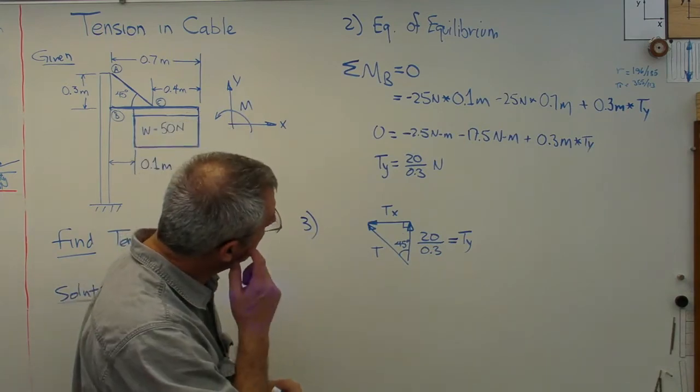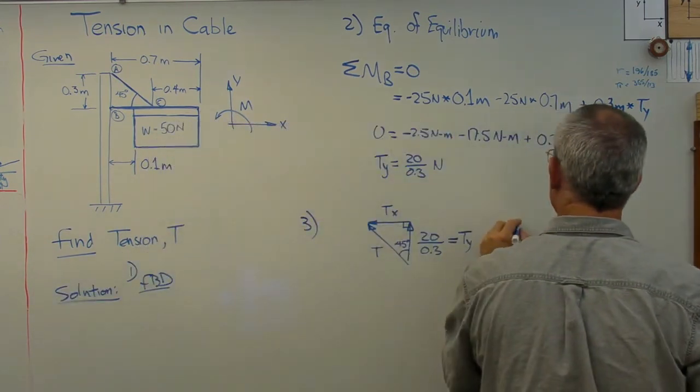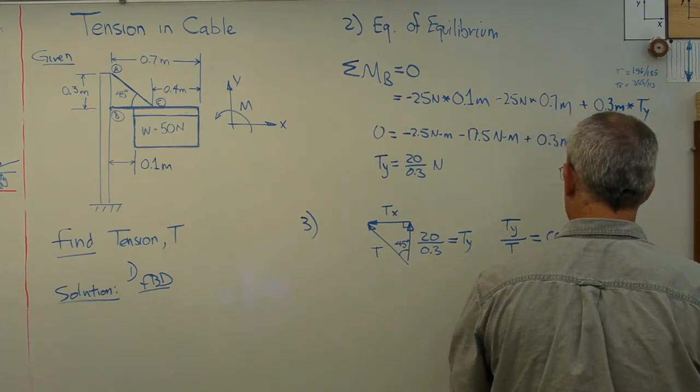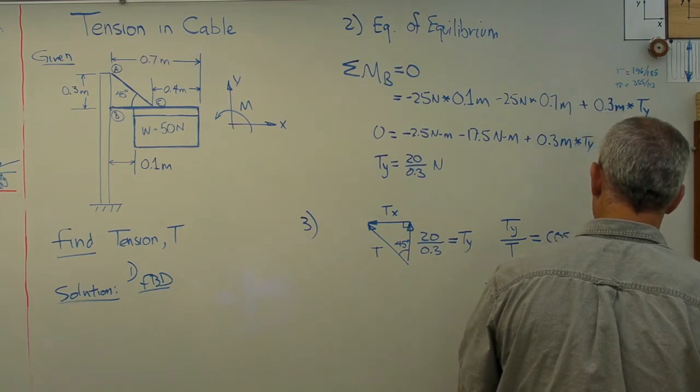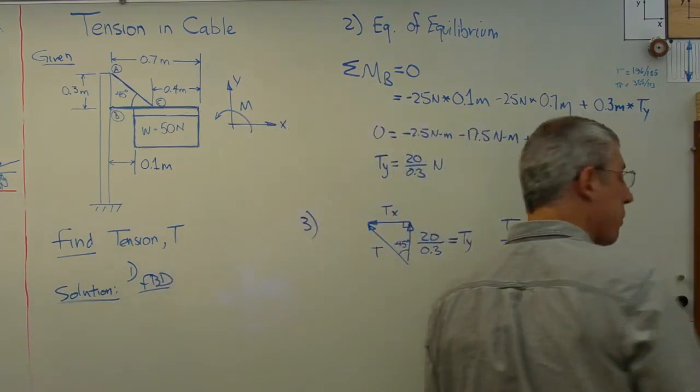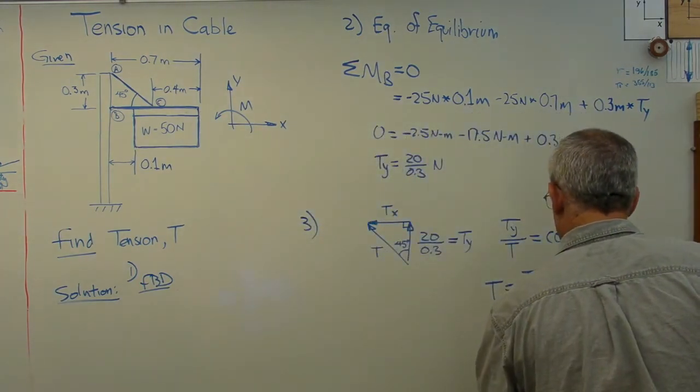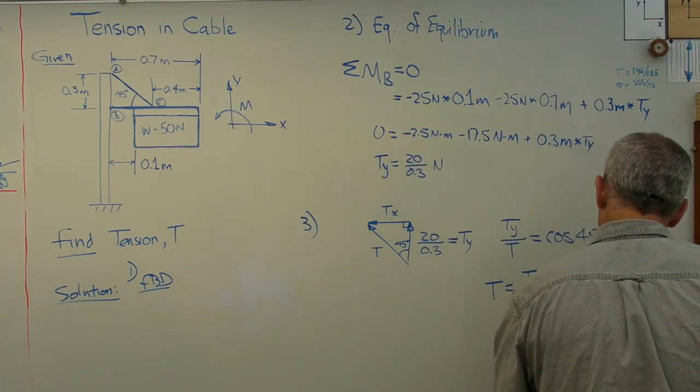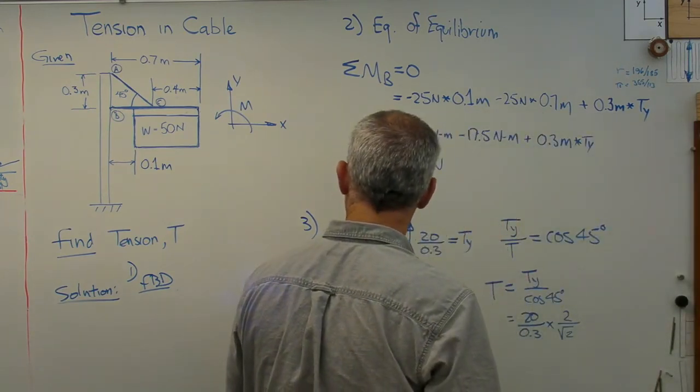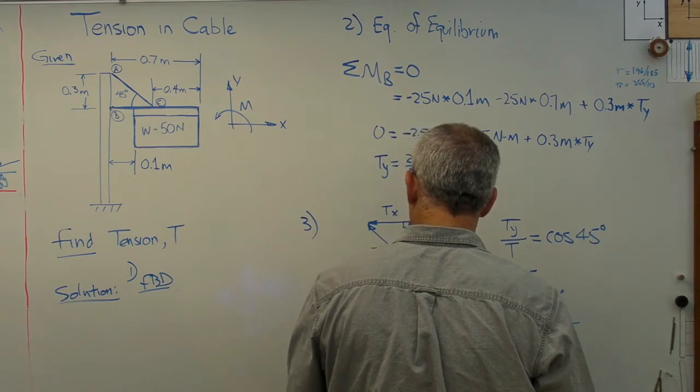Well, I don't even need to figure out TX. But I do know, let's see. If that's 45 degrees, TY over T must be the cosine of 45. So TY over T cosine of 45, or T equals TY over cosine of 45 degrees. Okay, and how am I doing? I'm doing fine here. So let's put some numbers in there. Now remember, cosine of 45 is the square root of 2 over 2. So let's see, I'm going to put 20 over 0.3 times square root of 2 in the Newton denominator now, and that in the numerator. And if I work this all out, I'm going to find out that T equals 94.281 Newtons.